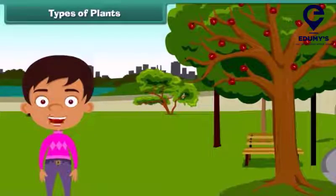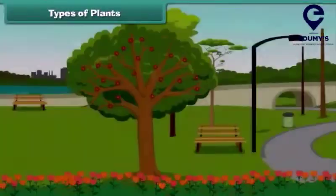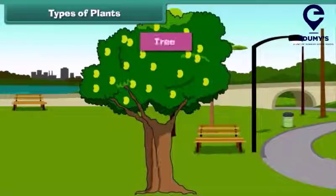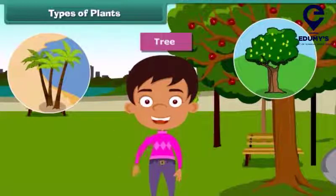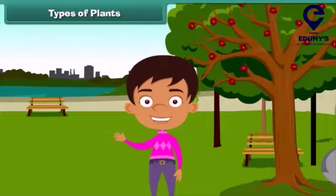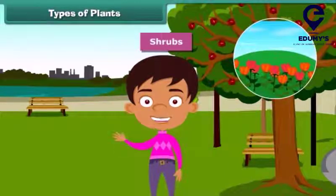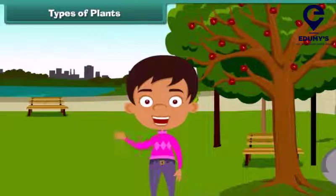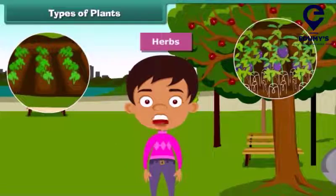Children, we often see different types of plants around us. We find that some plants are tall while some are small. Plants which are very tall and strong are called trees — for example, mango tree, coconut tree, and neem. Plants which are smaller than trees are called shrubs, such as rose and sunflower. Besides these, some plants are very small and are called herbs — brinjal and spinach are examples of herbs.